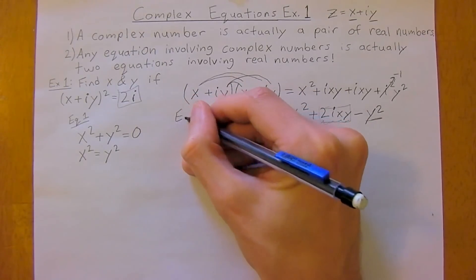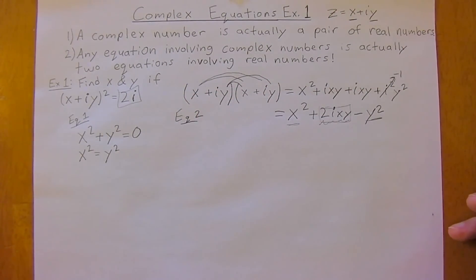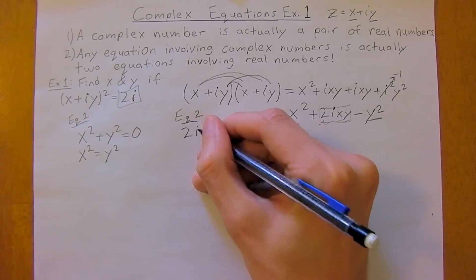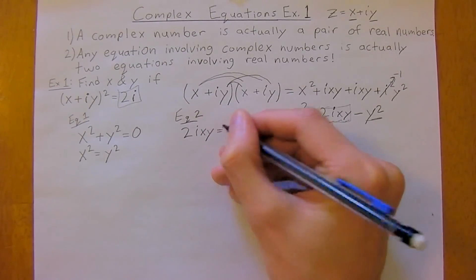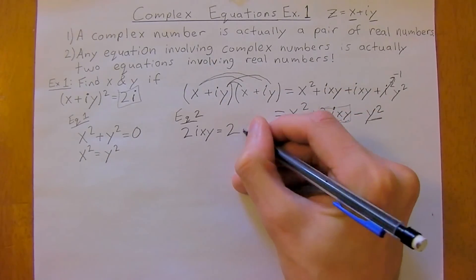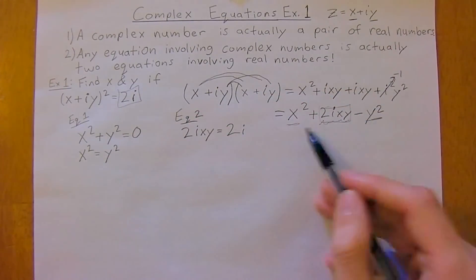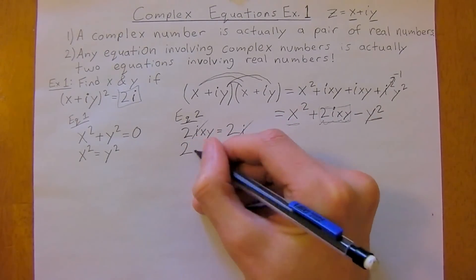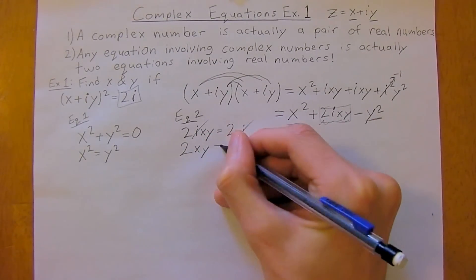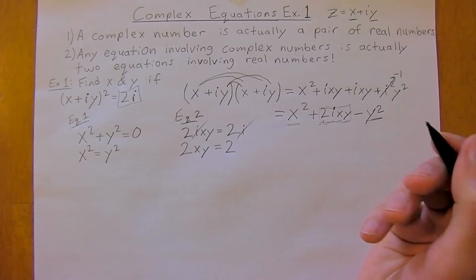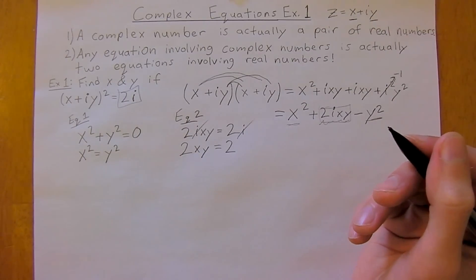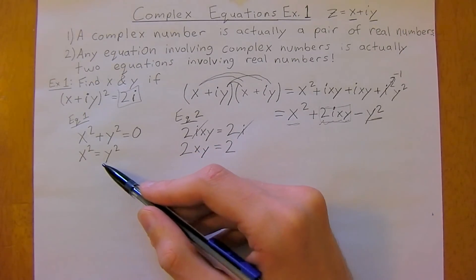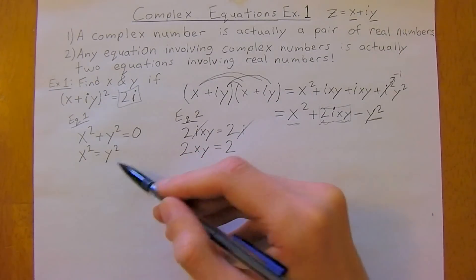Equation 2 is going to be 2ixy equals 2i. We've grouped these two together, and the i's cancel, leaving us with 2xy equals 2. Now we need to figure out what x and y can be equal to.